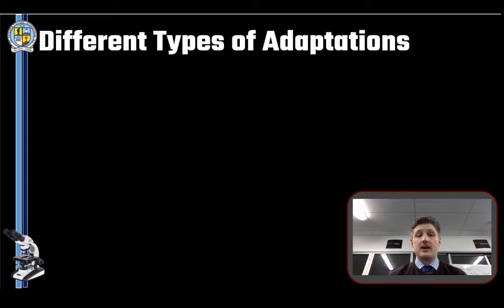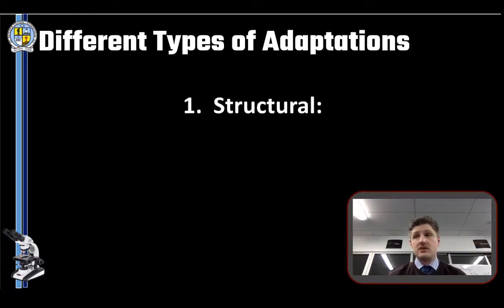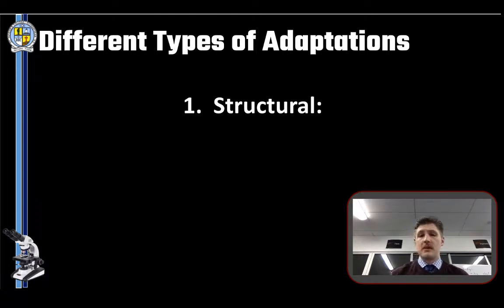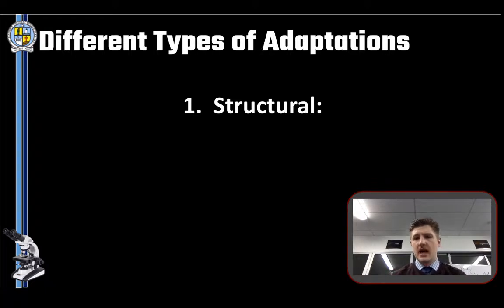Now we're going into the main types of adaptations. The first is structural adaptations — these are the physical makeup of an organism, basically how it is built. These are often the things you will see and are the most noticeable adaptations.